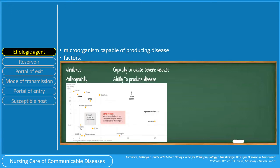Virulence is the capacity to cause severe disease. Virulence is a relative term — there is no absolute measure of virulence, and it is always measured relative to another microorganism. For example, measles virus is of low virulence, while the rabies virus is highly virulent. In some cases, the fatality rate is used to express virulence. As you can see in this graph, MERS and SARS are more virulent than the common cold or measles.